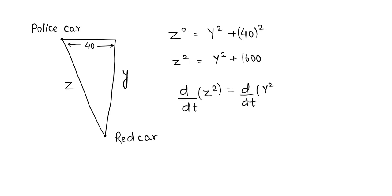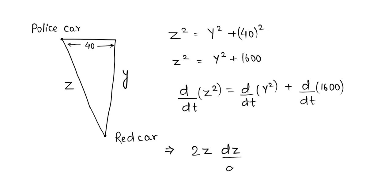We will be differentiating y squared here, and d/dt of 1600 equals 0 since the differentiation of a constant is 0. Hence, we get 2z times dz/dt equals 2y times dy/dt.